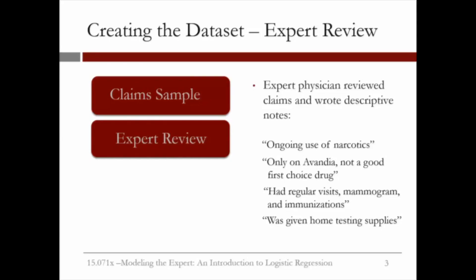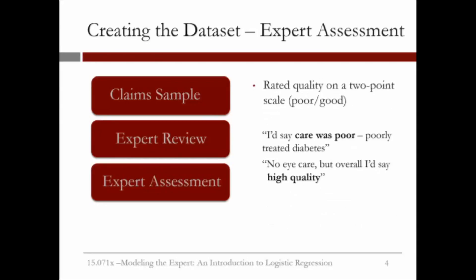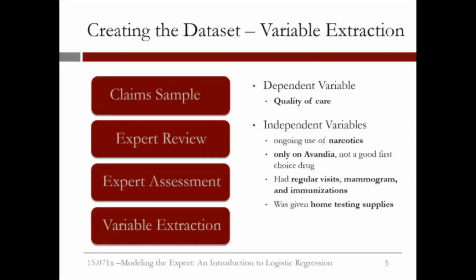Examples included: care was poor, poorly treated diabetes; no eye exam, but overall high quality. Based on these comments, we extracted variables. The dependent variable was the quality of care. The independent variables involved the ongoing use of narcotics, only on Avandia, regular visits, mammograms and immunizations, and home testing supplies — overall covering diabetes treatment variables, patient demographics, healthcare utilization, providers, claims, and prescriptions.